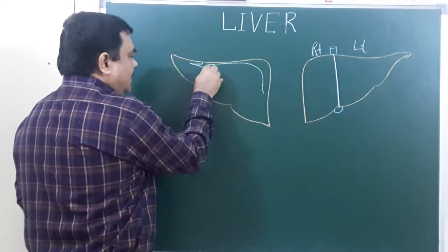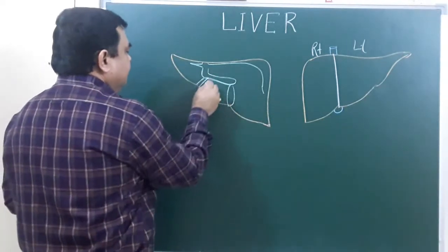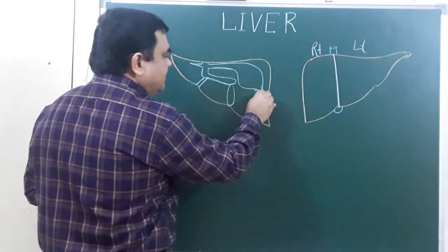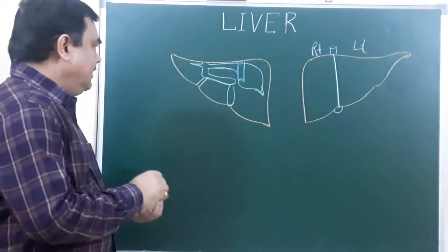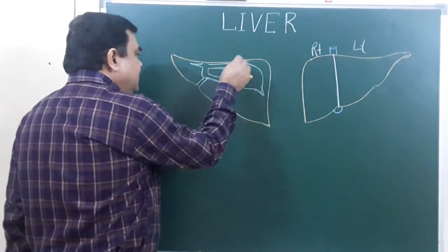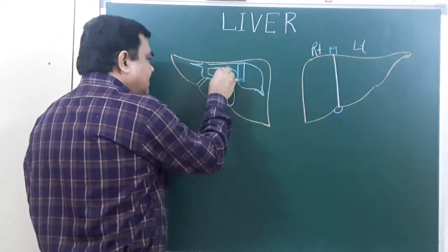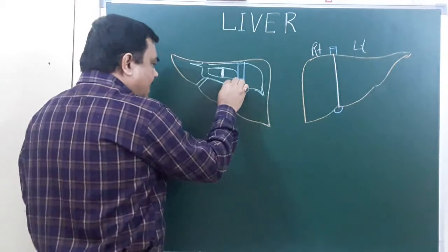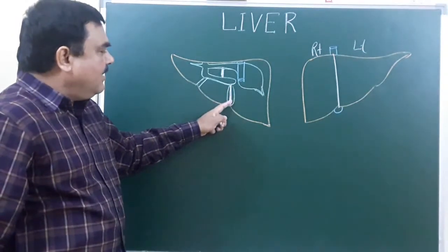Posteriorly, here is the left triangular ligament, the superior coronary ligament, the fissure for ligamentum venosum, and the porta hepatis. Here is the fossa for the gallbladder, the fissure for ligamentum teres, the inferior coronary ligament, and the right triangular ligament. Here is the position of the inferior vena cava on the posterior side. The division line passes through the quadrate lobe, dividing it into two parts.